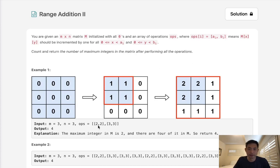Essentially they give you a coordinate, and that's going to start from 0, 0 all the way to that coordinate, and everything inside that area is going to be incremented by 1.